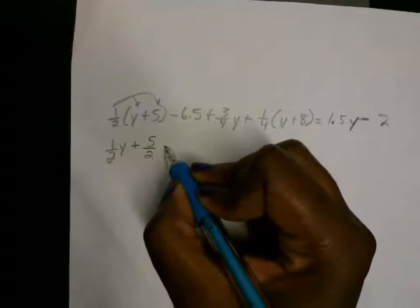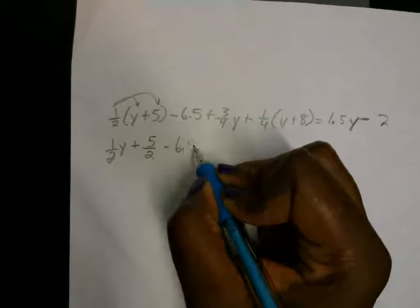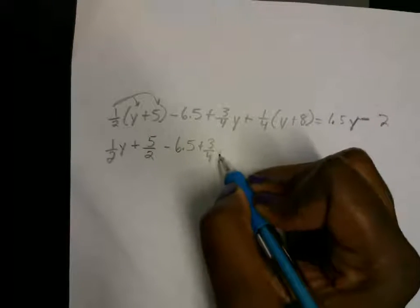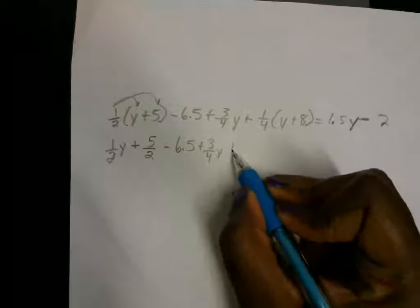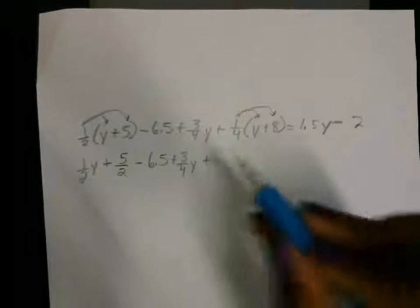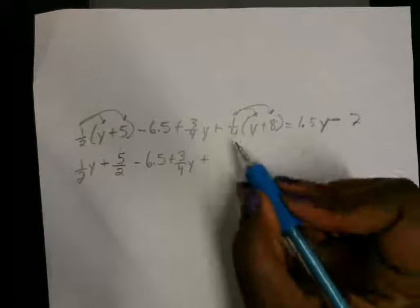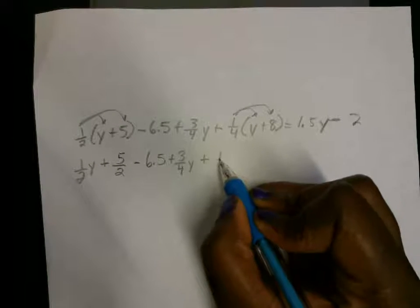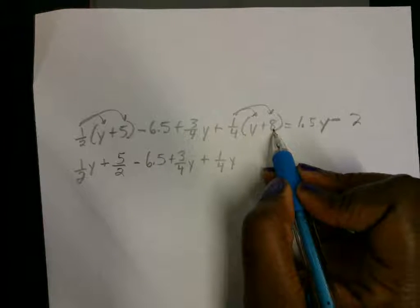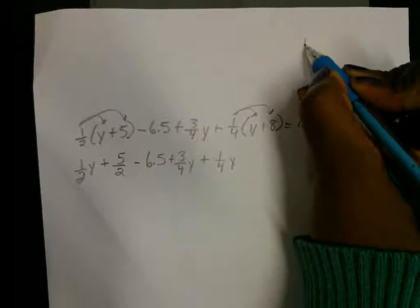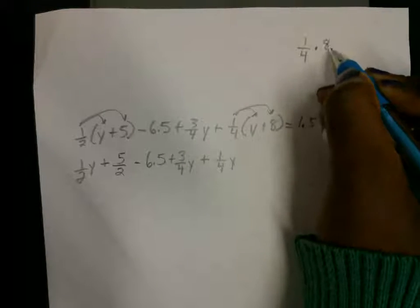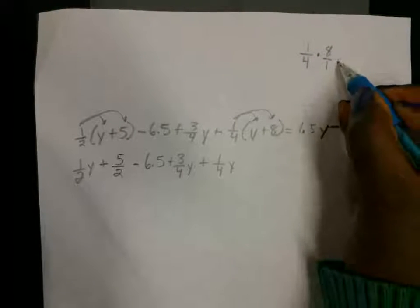I'm going to bring down the minus 6.5, bring down the plus three-fourths y, and then the plus sign, and I'm going to distribute here, because I'm doing all distributive property first. So this one-fourth times y gives me one-fourth y, one-fourth times 8. If I multiply that out to the side, one-fourth times 8, write it as a whole number, 8 over 1.